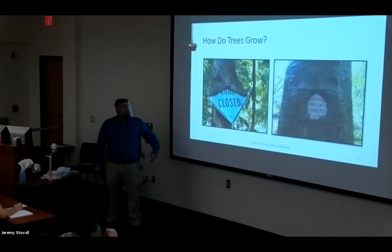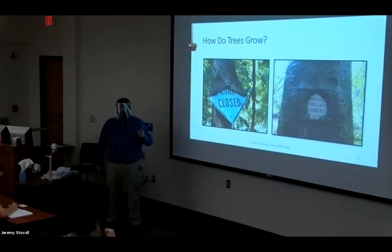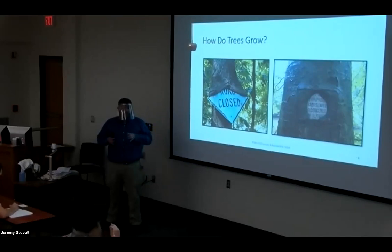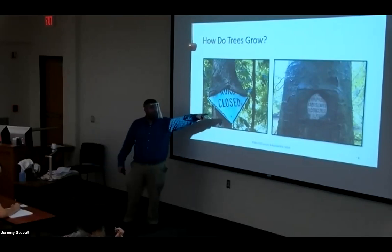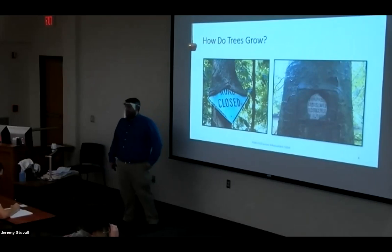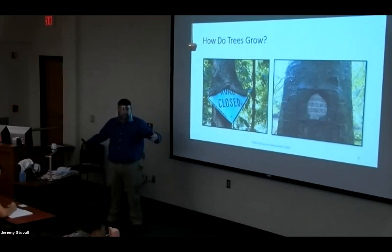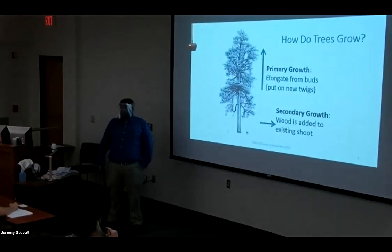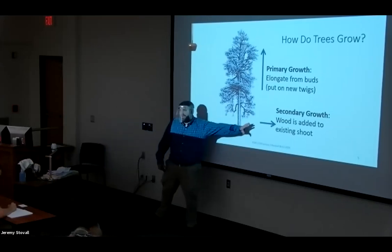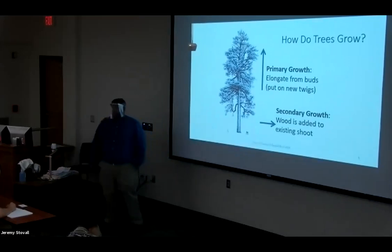Trees have two types of growth. They grow in length from the top — that's primary growth. And here's an example of secondary growth: they're woody, so they expand in diameter after they've grown in length. You may have to replace a sign if the tree grows around it and eats it. You can see barbed wire right through the middle of a big old tree. So we have primary growth and secondary growth in our woody species. Many non-woody species aren't going to have secondary growth. Everything we're talking about this semester will have primary and secondary growth.